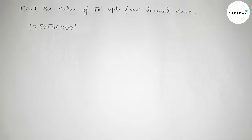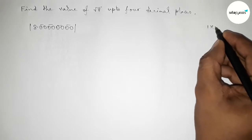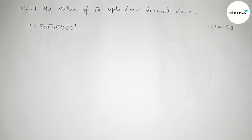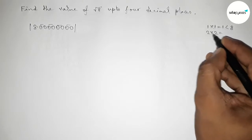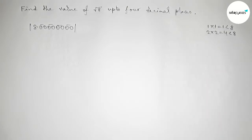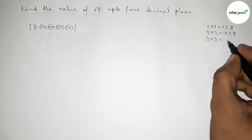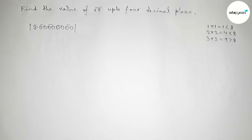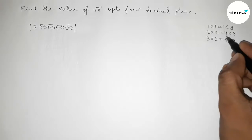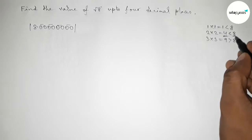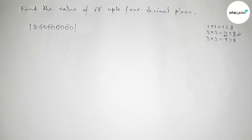Now we have to choose a number and multiply it by itself which gives a result less than 8. Taking 1 and multiplying by 1 is less than 8 but not almost near. Taking 2 and multiplying by 2 gives 4, which is less than 8 and almost near. Taking 3 and multiplying by 3 gives 9, which is greater than 8. So we have to take 2 because 4 is less than 8 and almost near.